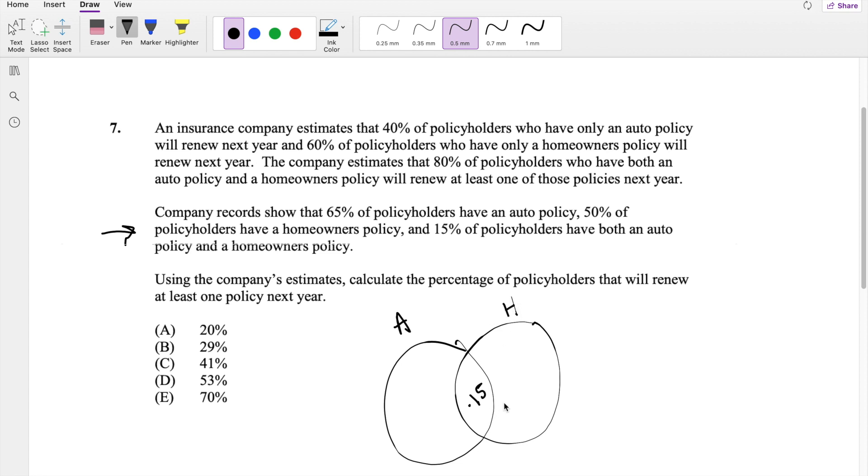So if 15% already has both, then we know the people that have just an auto will be 0.65 minus 0.15, which is equal to 0.5. And if we're looking for just homeowners, that's going to be 0.5 minus 0.15, which is 0.35.